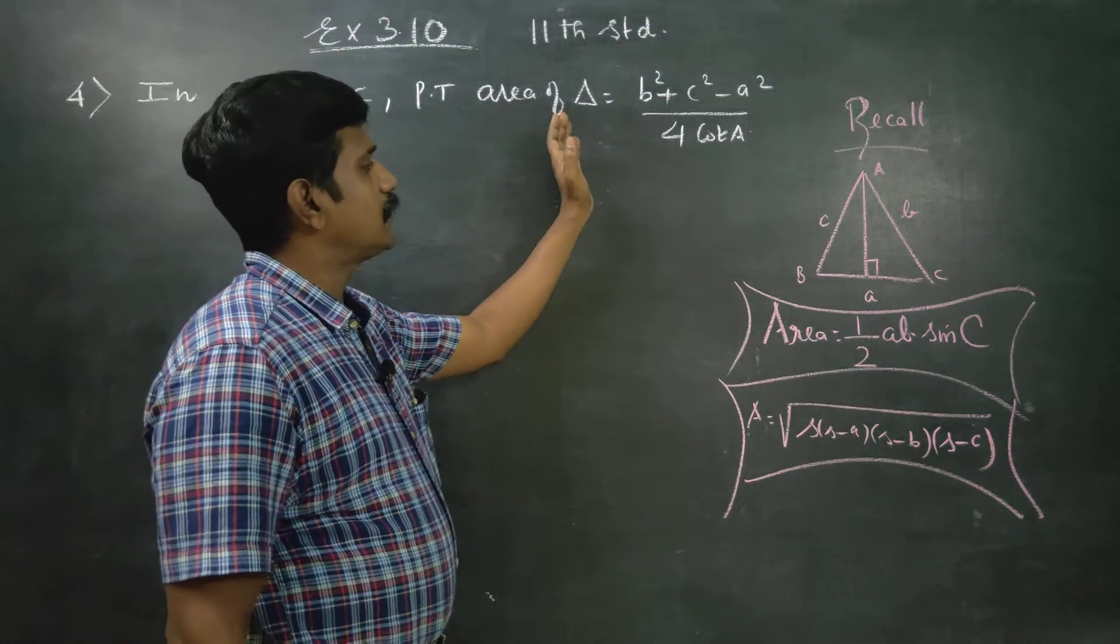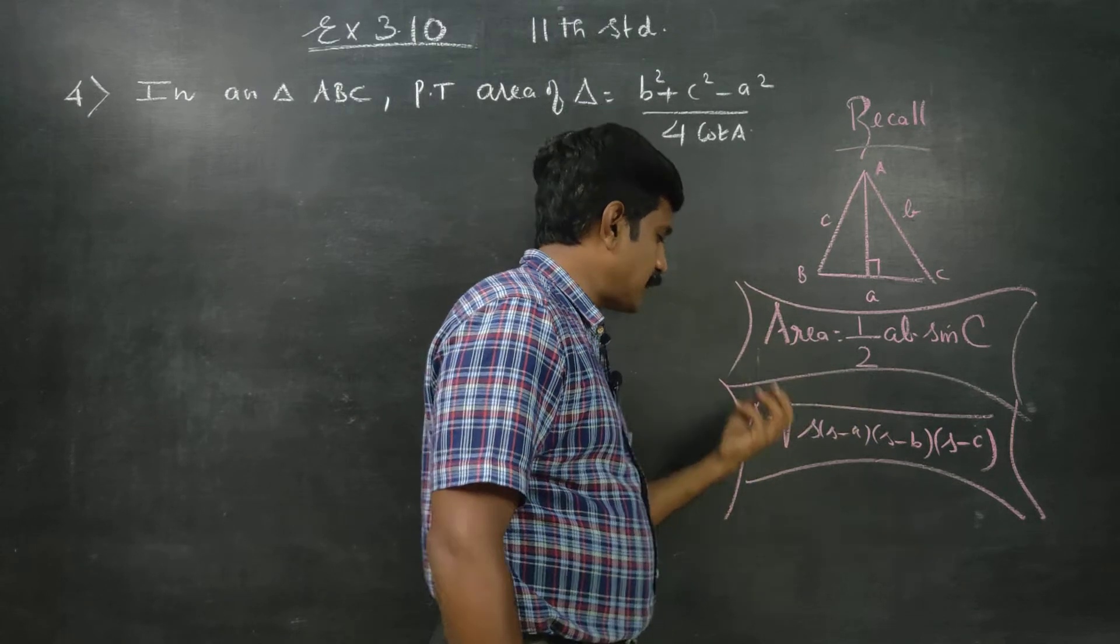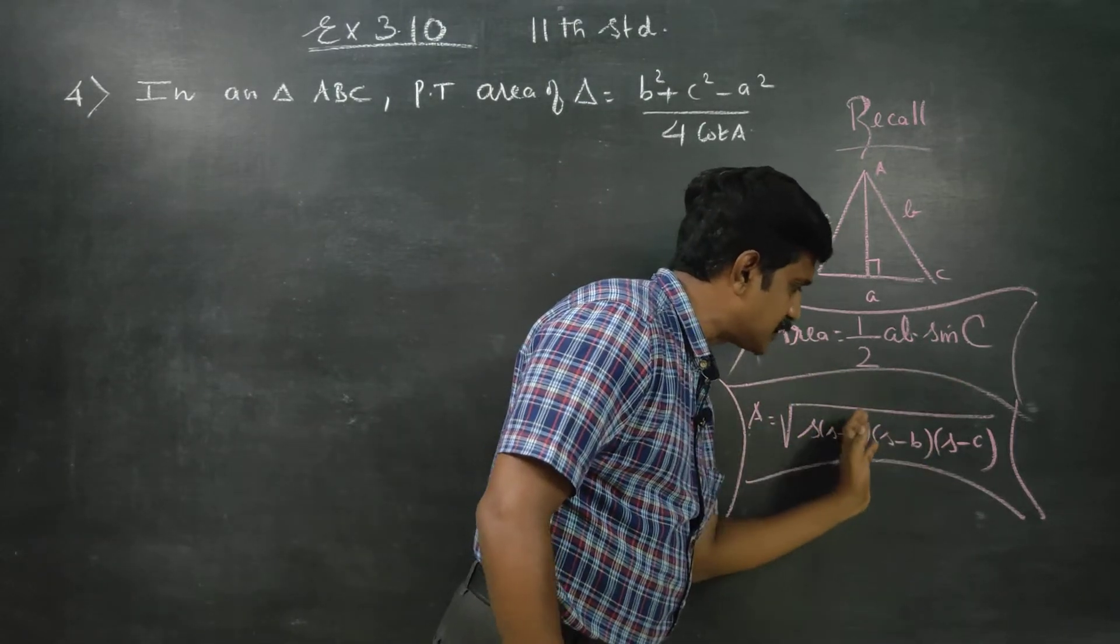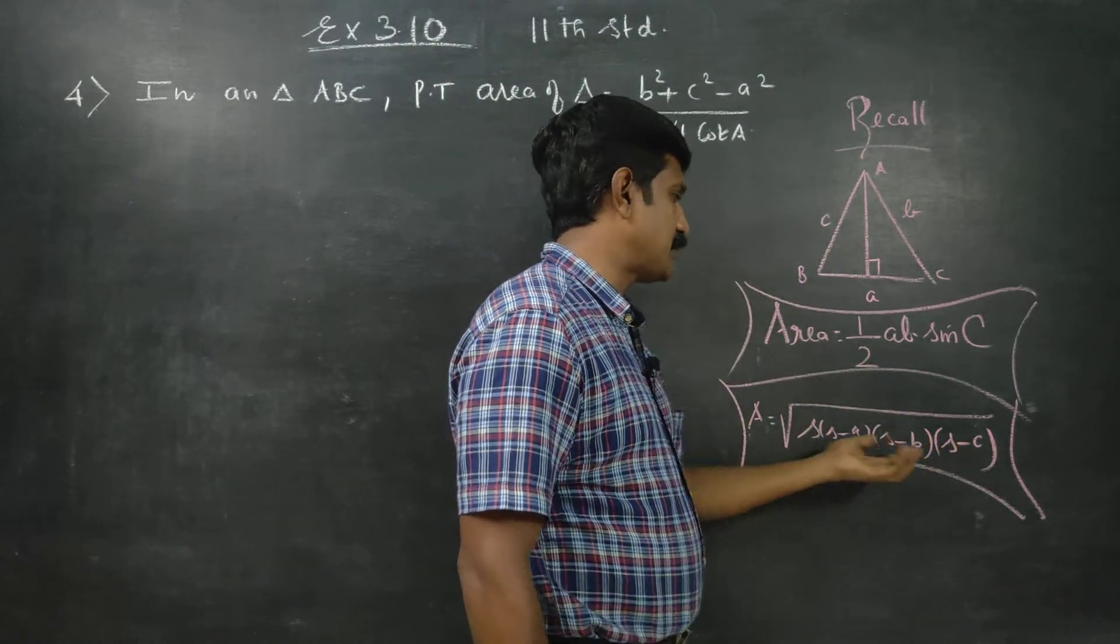before entering into this sum, just information about area of the triangle. We very well know Heron's formula: area is equal to square root of s into s minus a into s minus b into s minus c. This is using the sides and the perimeter.